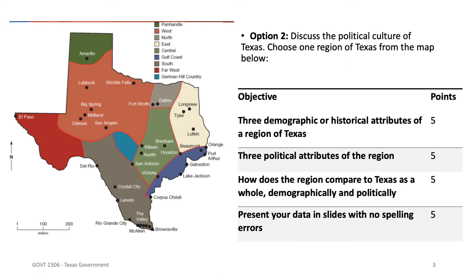For example, if I wanted to choose East Texas — which has Longview, Tyler, and Lufkin in it — I would list three demographic or historical attributes of that region of Texas. What's special about that region? What kind of people move there and live there? What's happened historically in that part of the world? Was there historically a lot of oil drilling? Was there a lot of foundries? Just kind of what was going on there historically?